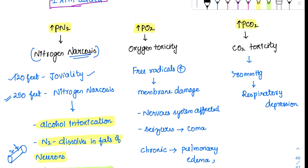Increase in PO2 will cause oxygen toxicity. Too much of anything is good for nothing — when oxygen's partial pressure is very high, it generates loads of free radicals. All the superoxide forms of oxygen are very dangerous; these free radicals can damage all the membranes, especially the nervous system, leading to seizures and coma. In chronic oxygen toxicity, there will be pulmonary edema and atelectasis of the lung.